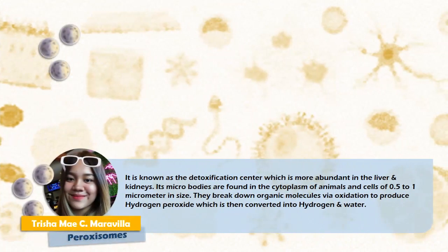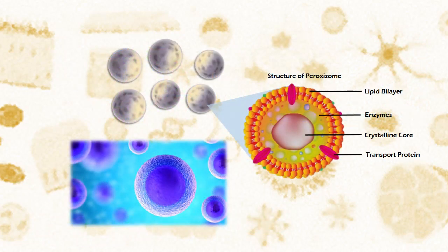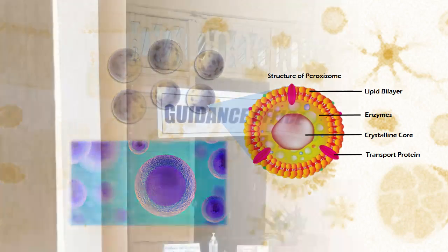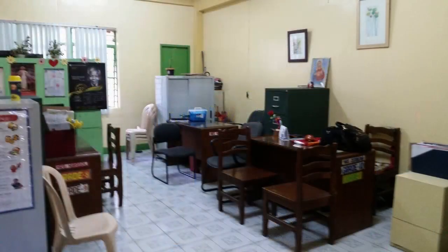Coming to what is known as the detoxification center, which is more abundant in the liver and kidneys — the Peroxisomes. Their microstructures are found in the cytoplasm of animal cells, about 0.5 to 1 micrometer in size. They break down organic molecules via oxidation to produce hydrogen peroxide, which is then converted into hydrogen and water. Similar to peroxisomes, our guidance office breaks down inappropriate behavior in students to produce well-mannered, disciplined, and responsible traits, helping students grow and develop themselves.